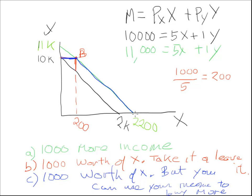Well, if you use all of your income to buy X, you have $11,000 worth of income. $11,000 divided by 5 is pretty close to $2,200. But notice, I can't get up here. That green section that I had in part A, where if you just had $1,000 more income, that's not available anymore because they say you can only spend it on good X.